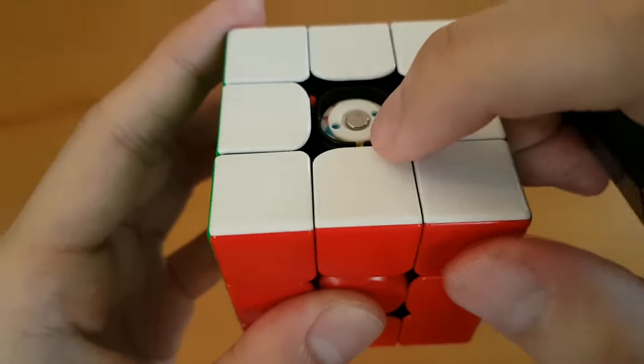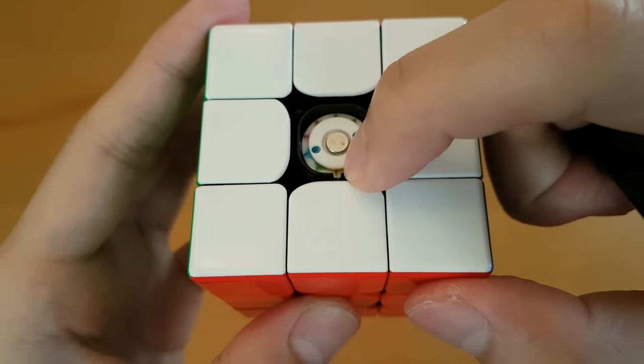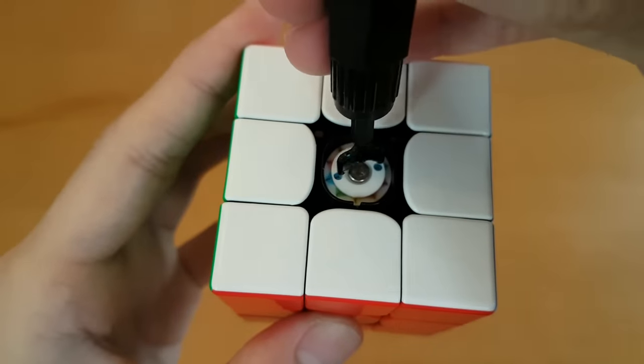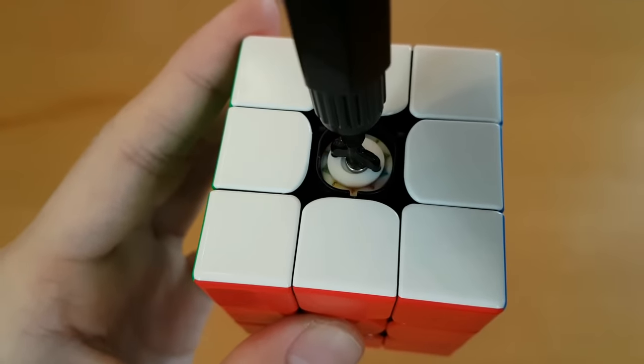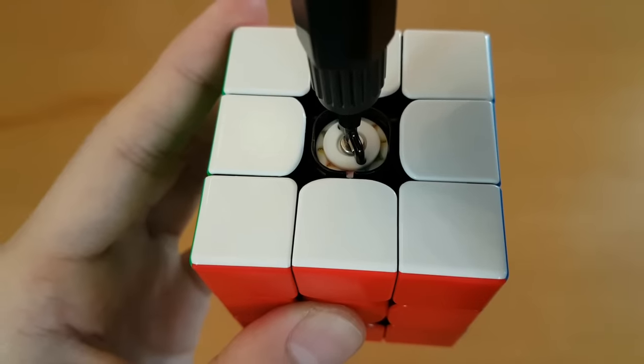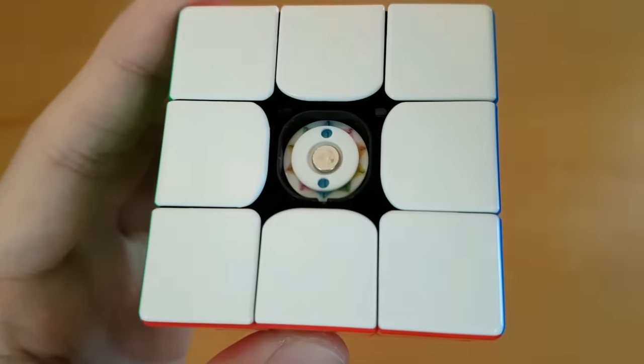And notice that when we turned that setting, this setting here at the gap is still three. Now if you turn clockwise, you can change the spring setting and that moves which number is shown at the gap and the big snap is one. And just remember, you have to do this on all six centers.